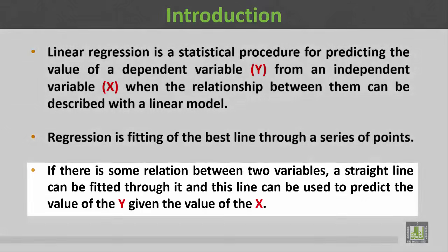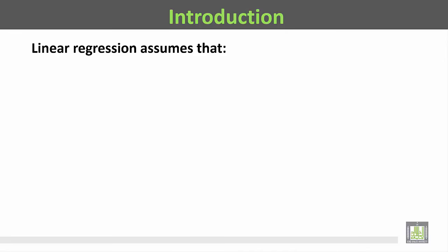If there is some relation between variables, a straight line can be fitted through it and this line can be used to predict the value of y given the value of x. إذا ما كانت هناك علاقة بين متغيرين فإن خطاً مستقيماً يمكن رسمه خلال هذه النقاط، ومن خلال ذلك الخط يمكن التنبؤ بقيمة المتغير التابع y بمعلومية قيمة المتغير المستقل x.